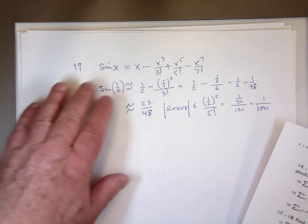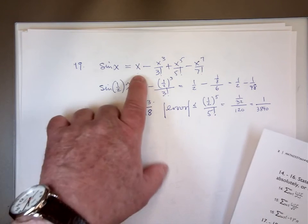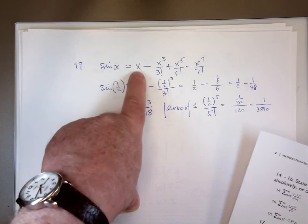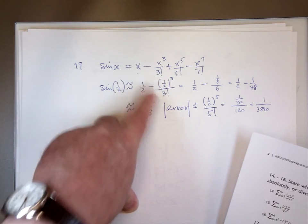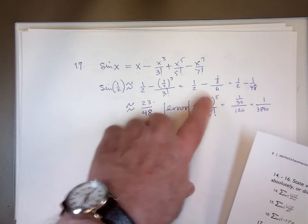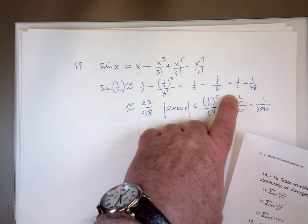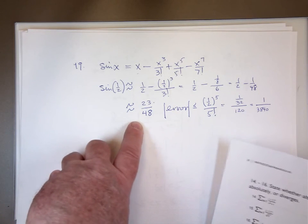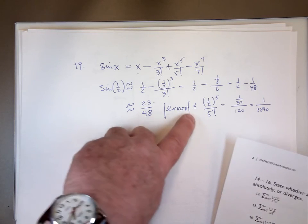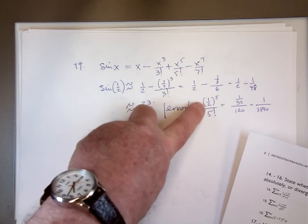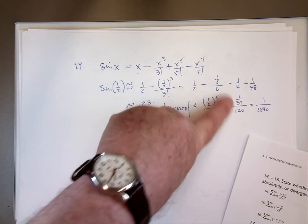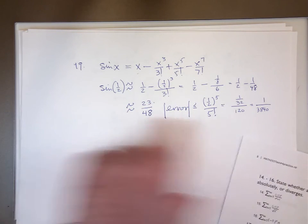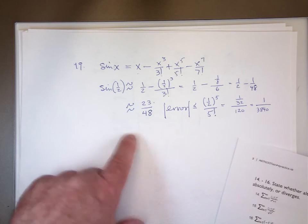Number 19: we're using the Maclaurin series expansion for sine x. Sine is an odd function, so all the exponents are odd. We use the first two terms to approximate sine of one-half: plug in one-half for x, and one-half cubed over 3 factorial — that's 1-eighth over 6, which is 1 over 48. The estimate for sine of one-half is one-half minus 1 over 48, which is 23 over 48. The error: the absolute value of the error is less than or equal to the next term, which when x is one-half is (one-half) to the fifth over 5 factorial — that's 1 over 32 over 120, or 1 over 3840. Our approximation is within 1 over 3840 of the exact value of sine of one-half.